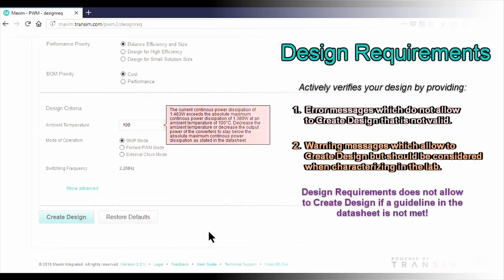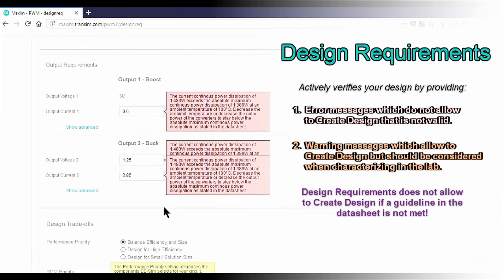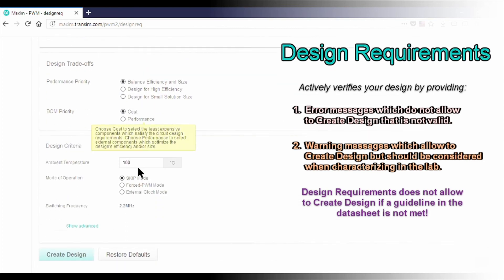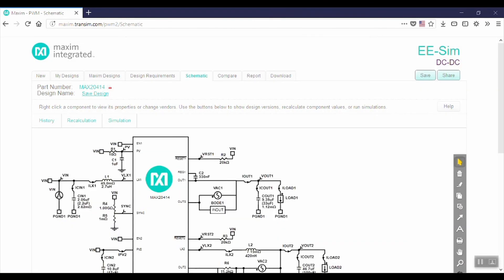Every text field on the design requirements tab will display an error or warning message if the requirement is beyond the part's capabilities. The message includes an explanation of the error or warning message and may also include a way to resolve it. In order to create a design, all error messages must be resolved.